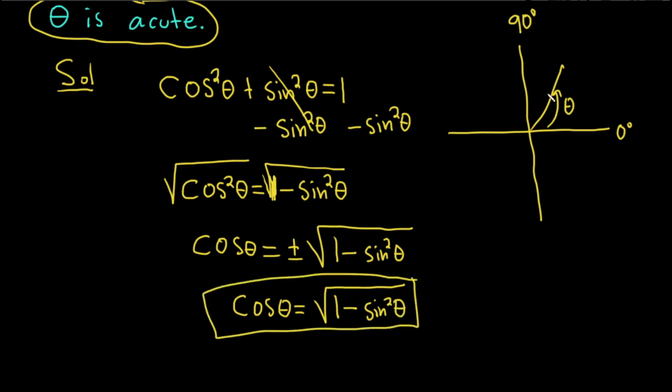So again, theta is an acute angle. That means it's over here in quadrant 1. And cosine is the x-coordinate on the unit circle. The x-coordinate over here in quadrant 1 is positive. Therefore, cosine must be positive, and so we only use the plus.